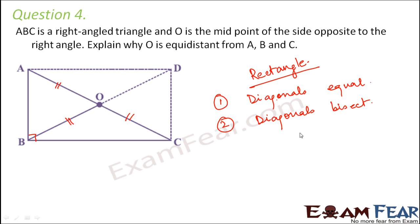Now when we say that diagonals bisect each other, that would mean OA will be equal to OC and OB will be equal to OD.